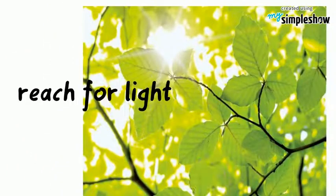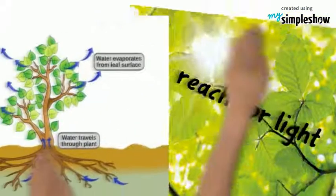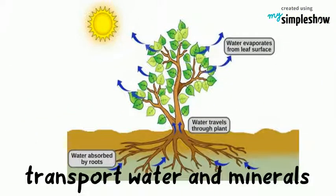The stem helps the plant to reach for light. The stems transport water and minerals between the roots and the shoots.